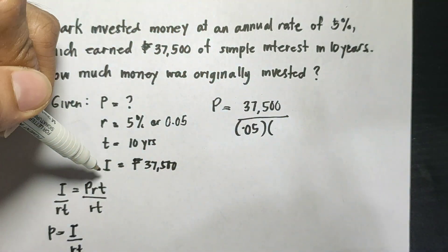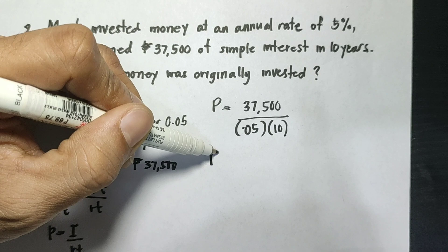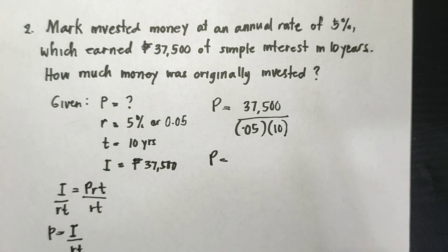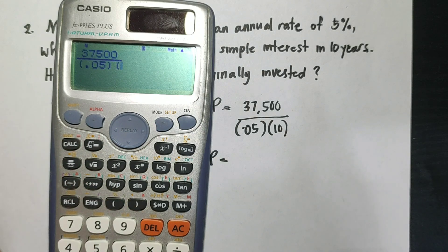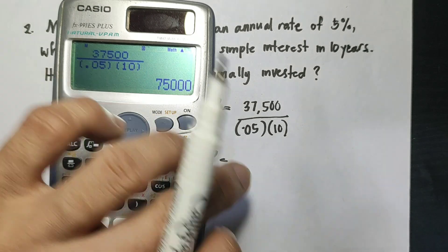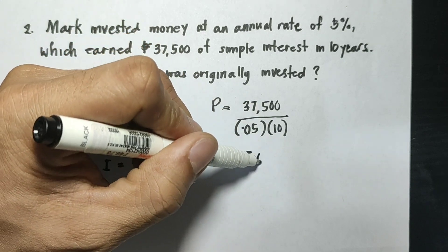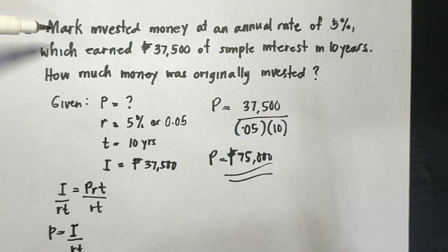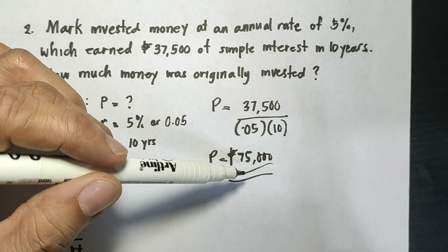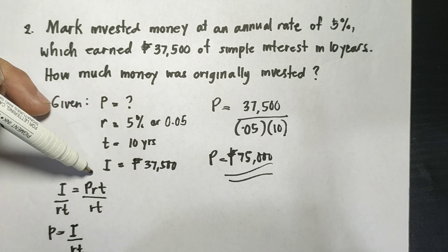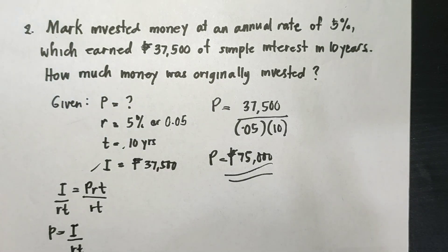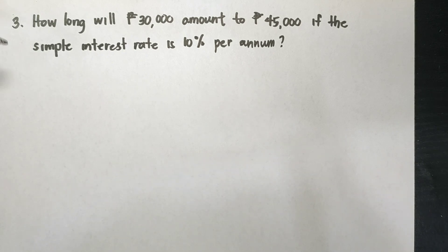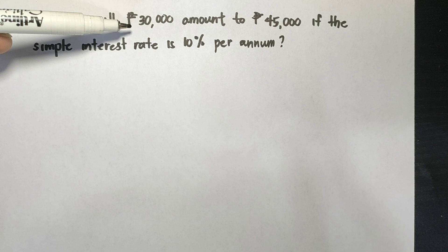Substituting the values — I is 37,500, R is 0.05, and T is 10 — using our calculator: 37,500 divided by 0.05 times 10 gives 75,000 pesos. Therefore, Mark invested 75,000 pesos and earned 37,500 pesos in interest within 10 years at an annual rate of 5%.